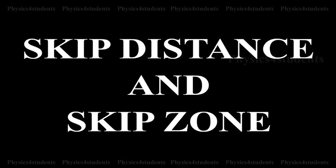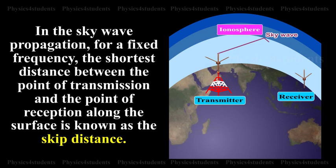Skip distance and skip zone. In the sky wave propagation, for a fixed frequency, the shortest distance between the point of transmission and the point of reception along the surface is known as the skip distance.